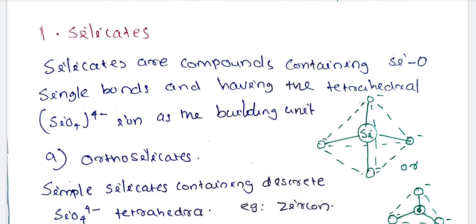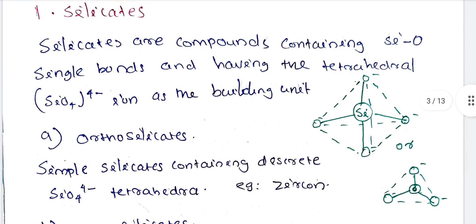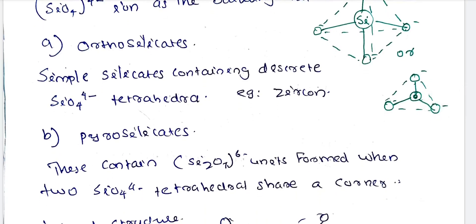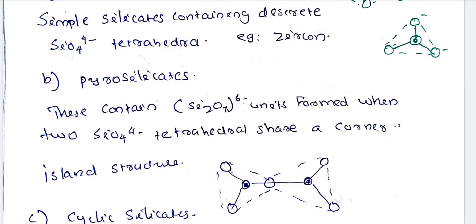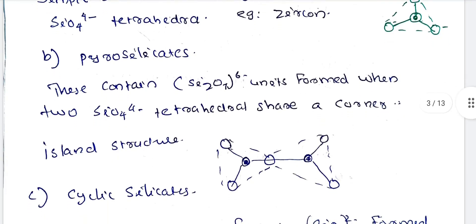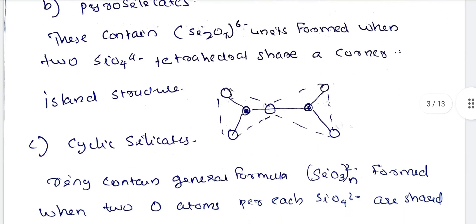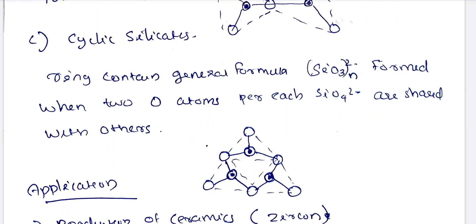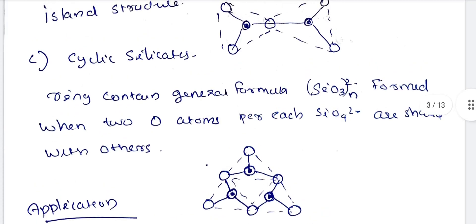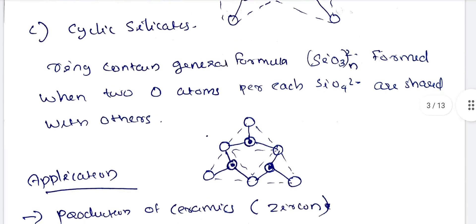Silicates are compounds containing Si-O single bonds and having the tetrahedral SiO4⁴⁻ ion as the building unit. Orthosilicates are simple silicates containing discrete SiO4 tetrahedra. Pyrosilicates contain units formed when two SiO4 tetrahedra share a corner — this is called an island structure. Cyclic silicates have the general formula SiO3N²⁻, formed when two oxygen atoms per each SiO2 unit are shared with each other.